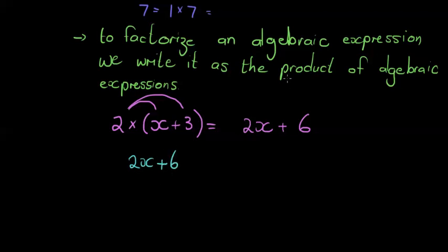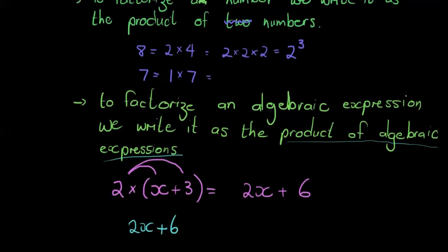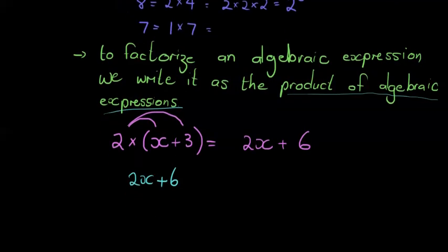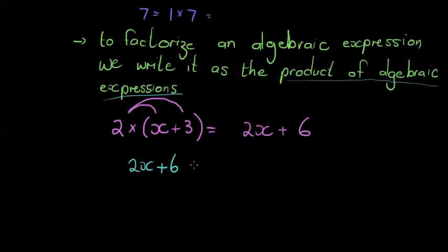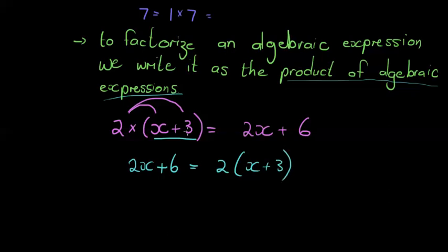So if I were given 2x + 6 and asked to factorize it, it means I must write it as the product of algebraic expressions. Numbers are also algebraic expressions — a number by itself is just a constant term. To write this as a product of two things, I see this was 2 times the expression (x + 3).